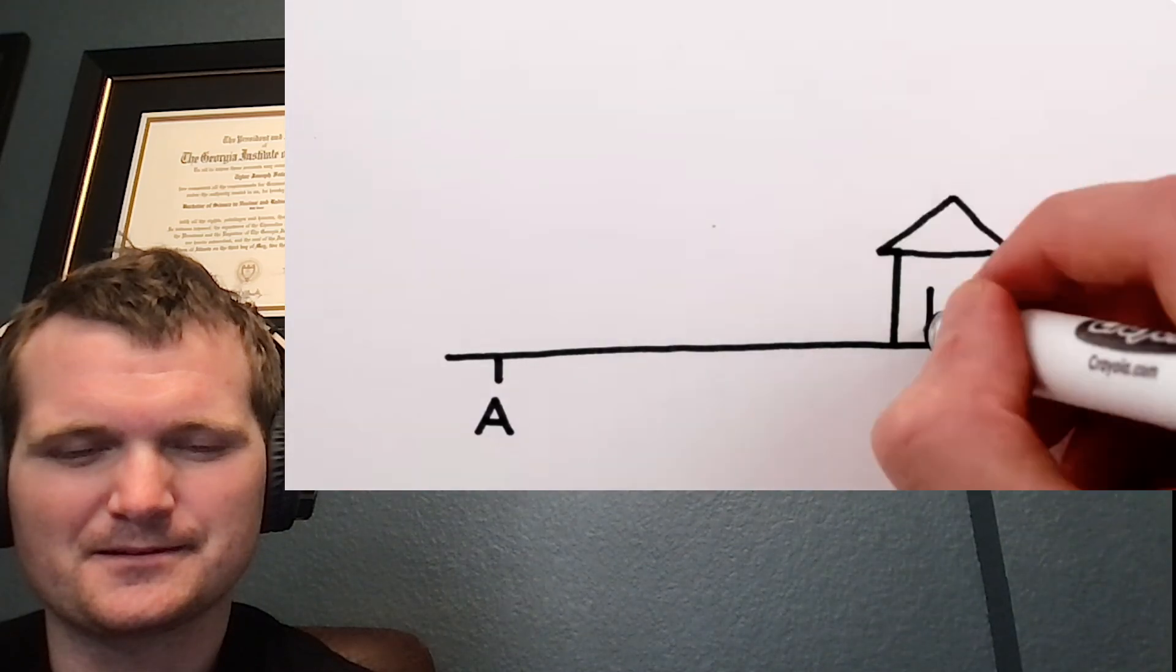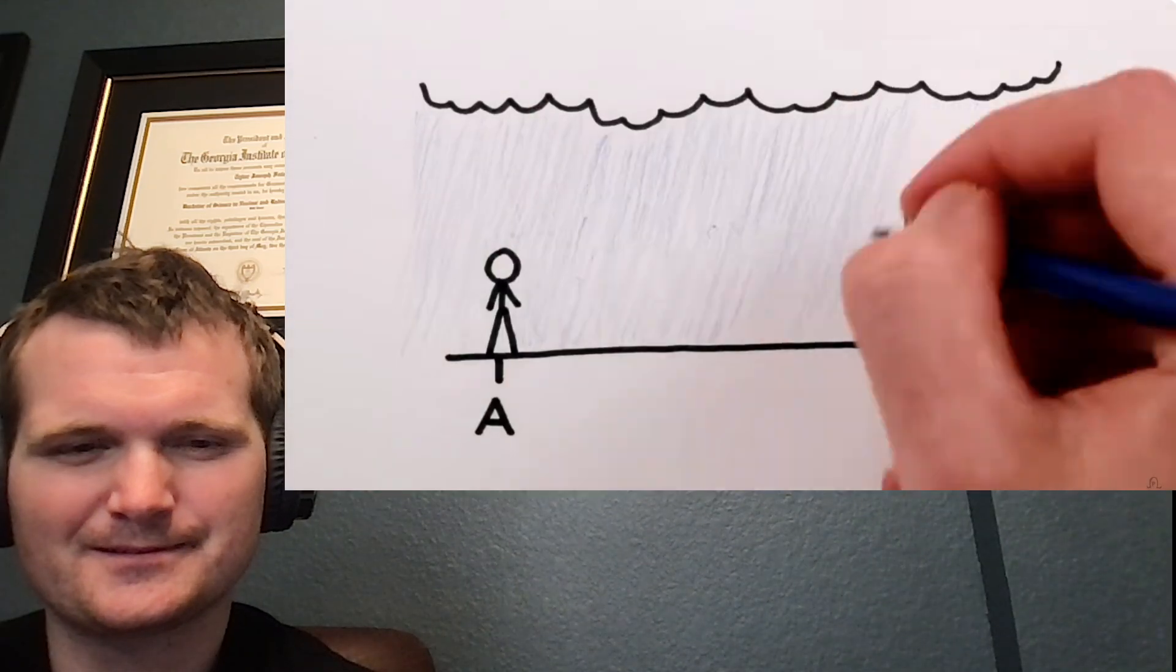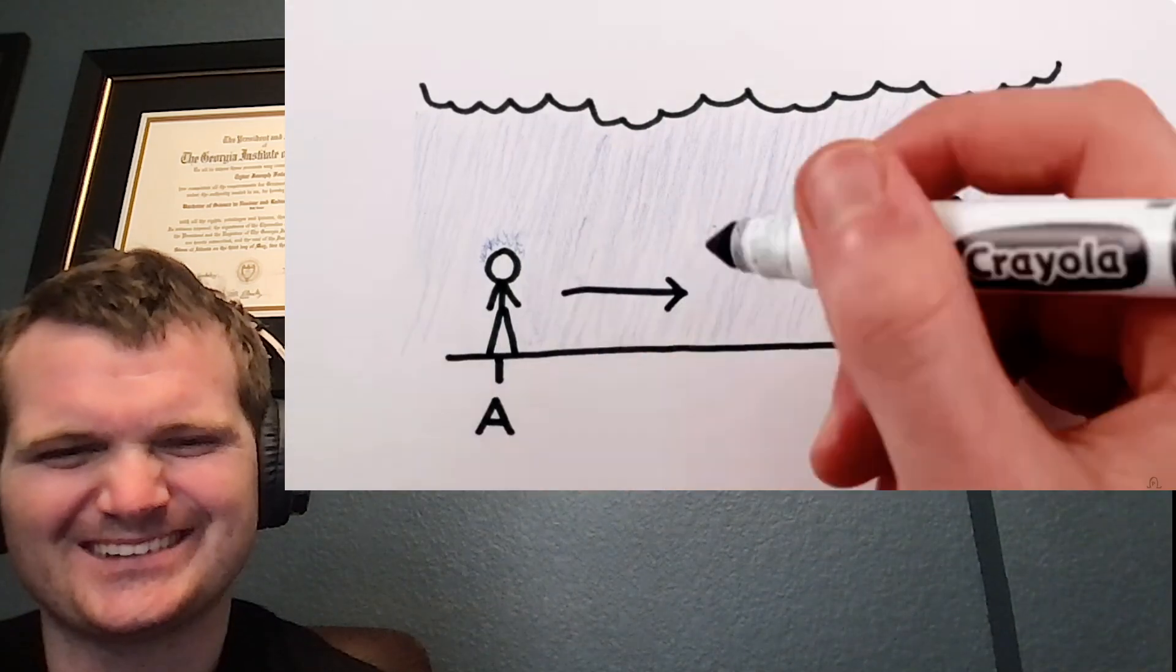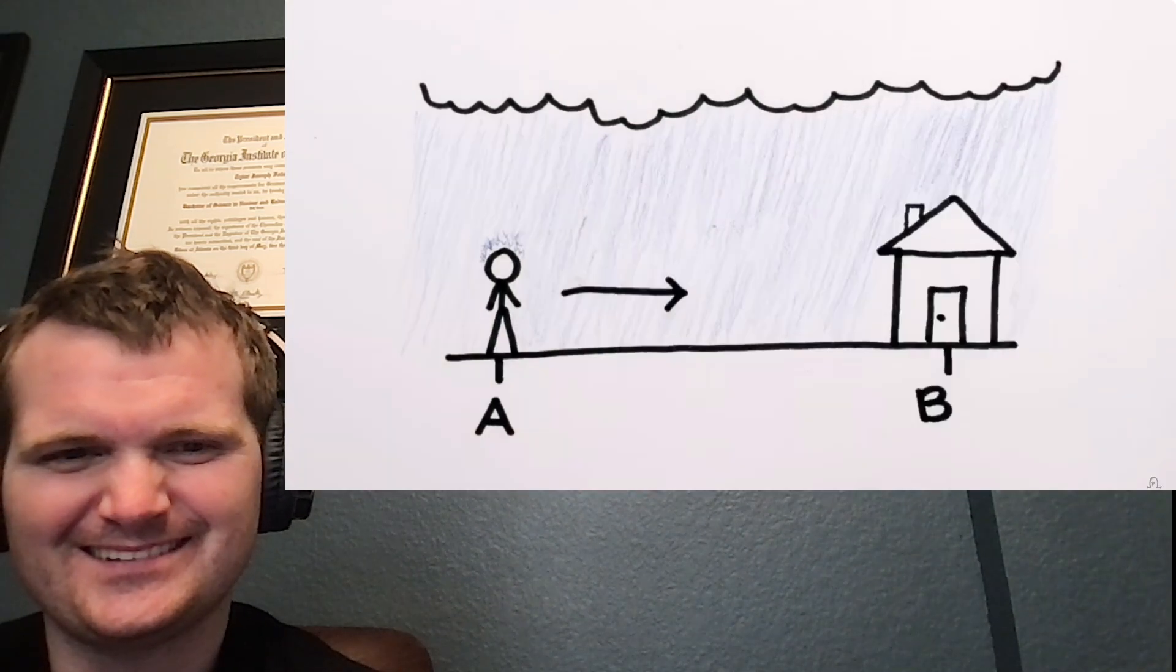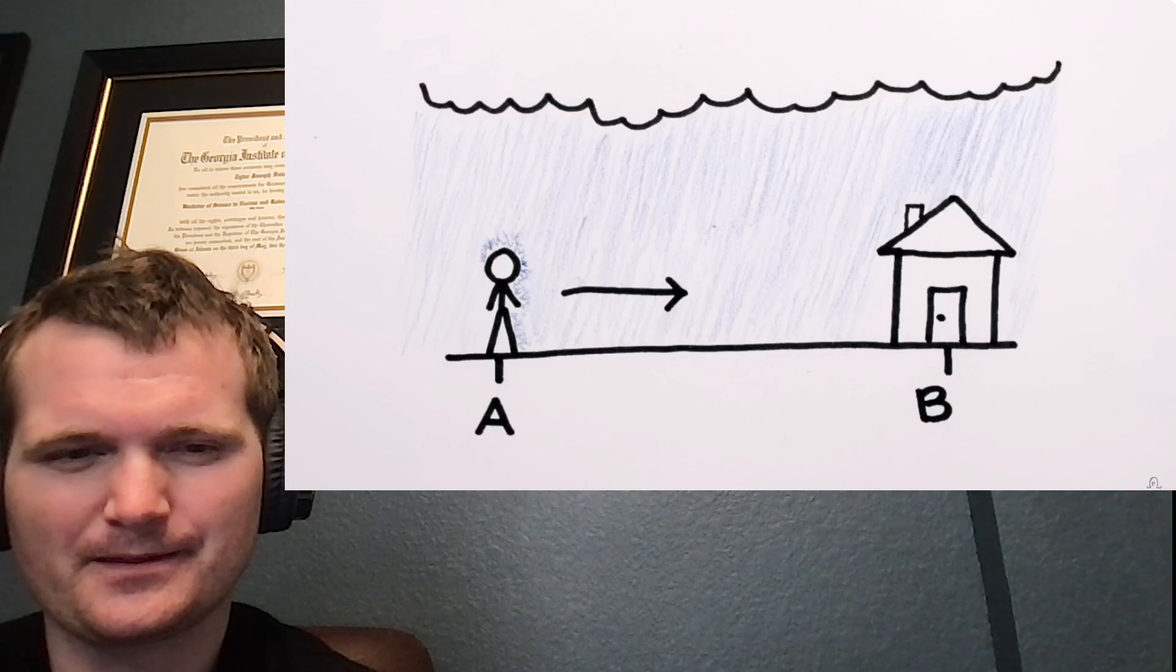But if you're trying to get from point A to point B, then standing still won't do you much good. And on route from point A to point B, the total amount of rain you run into from the side has nothing to do with how fast you're going.